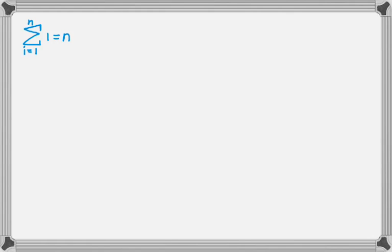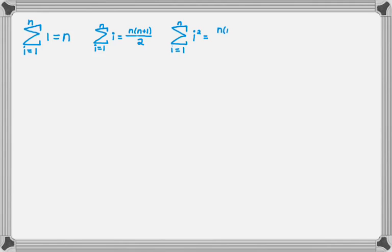You might remember them from algebra 2. The sum from 1 to n of just 1 is equal to n. The sum from 1 to n of i is equal to n times n plus 1 over 2. The sum from 1 to n of i squared is n times n plus 1 times 2n plus 1, all over 6. The way I remember that one is you're multiplying an odd number in the numerator, 2n plus 1, and then an odd number in the denominator, 3 — so 2 times 3 is 6.